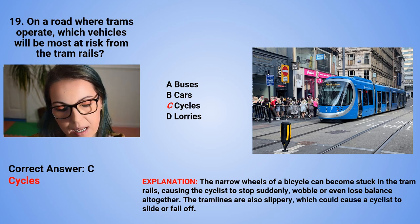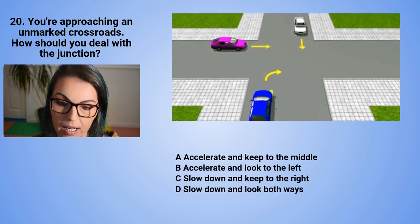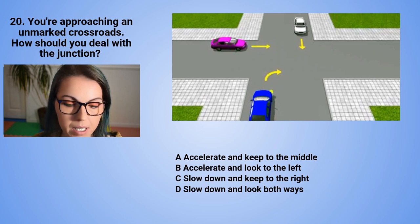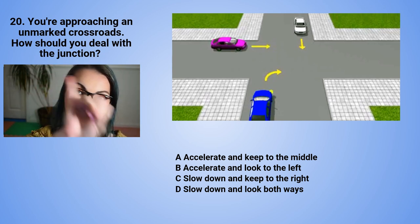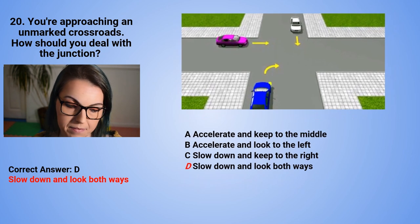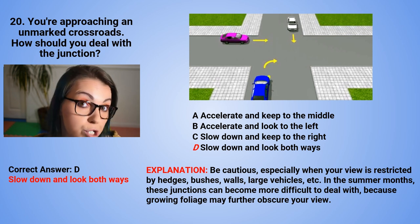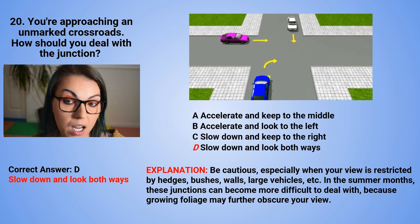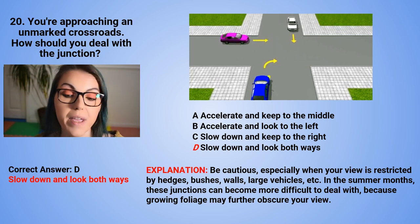Question 20: You are approaching an unmarked crossroads. How should you deal with the junction? A. Accelerate and keep to the middle. B. Accelerate and look to the left. C. Slow down and keep to the right. Or D. Slow down and look both ways. The correct answer is D — slow down and look both ways. Be cautious, especially when your view is restricted by hedges, bushes, walls, or large vehicles. In the summer months, these junctions can become more difficult because growing foliage may further obscure your view.